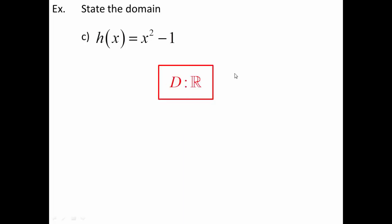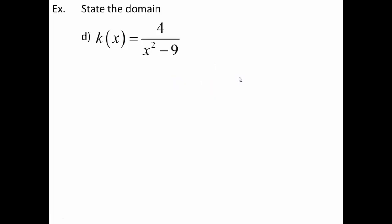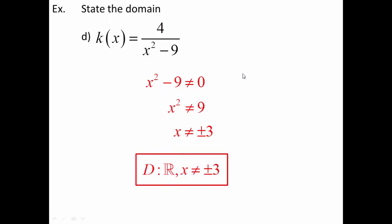Here we don't have a radical or a fraction — we have a polynomial. So all I have to do is look at this one and say the answer is all real numbers. No work required. The next one is a rational function again. I only care about the denominator, so I'll say x squared minus 9 cannot equal zero and solve for x. When I solve, I end up with two separate answers: positive and negative 3. So this one has two domain restrictions — all real numbers, x cannot be positive or negative 3.